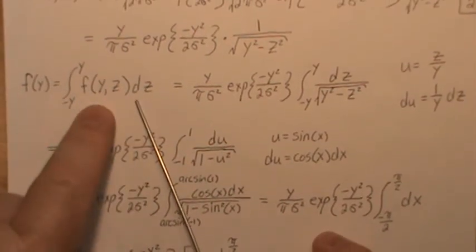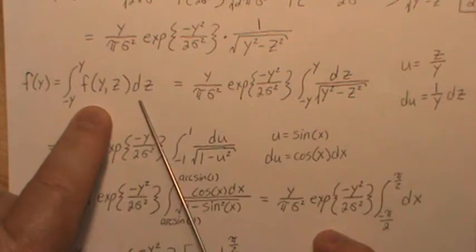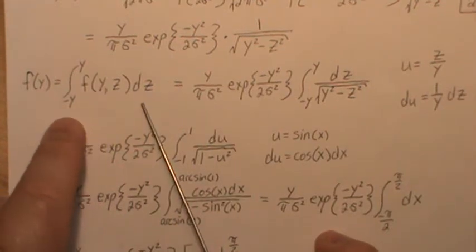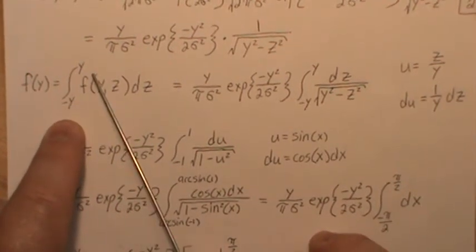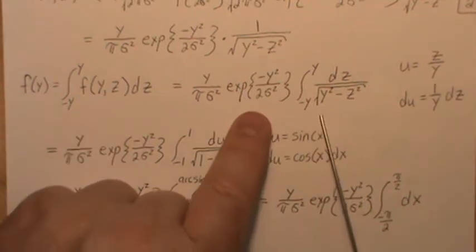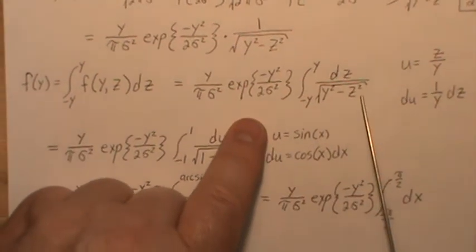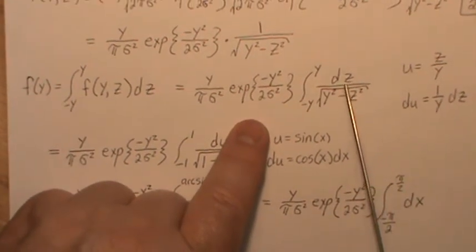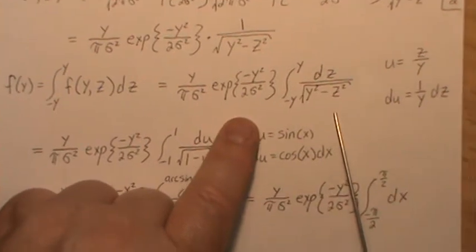So when I find the density of Y, which means we integrate this density over Z, we integrate it out. Remember, we're going from negative Y to Y. So we plug it in. And this is constant in regards to the Z world. So we're here.